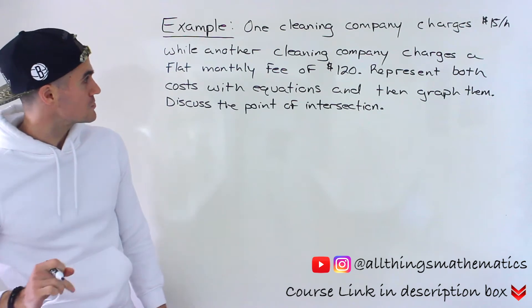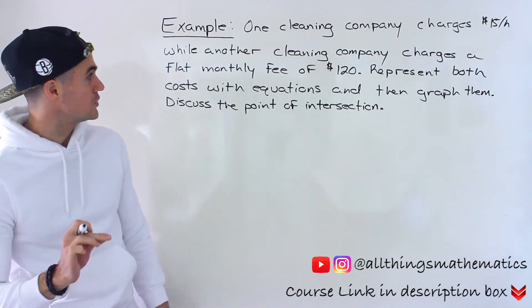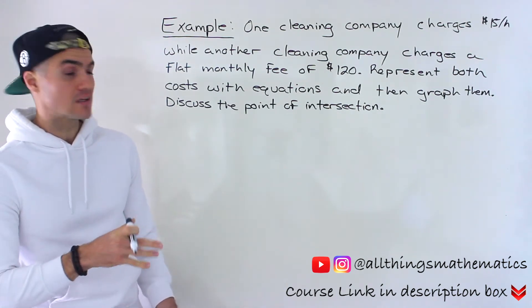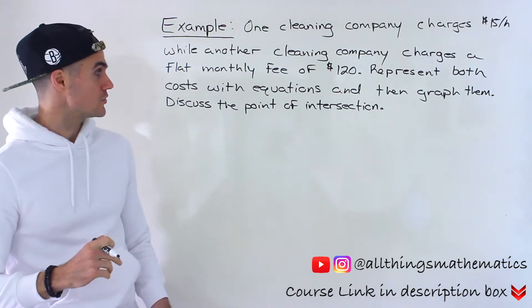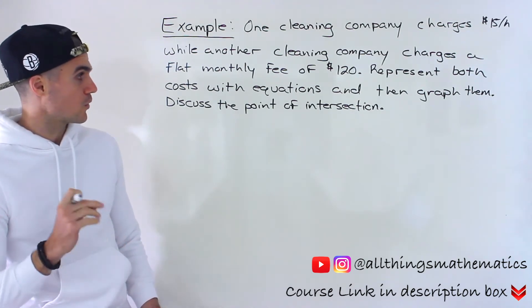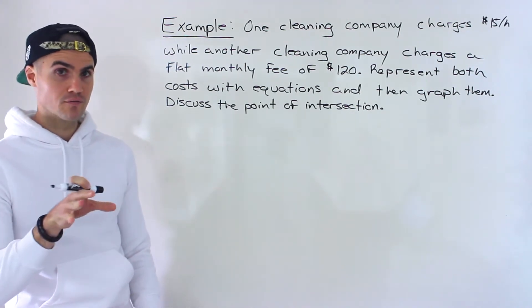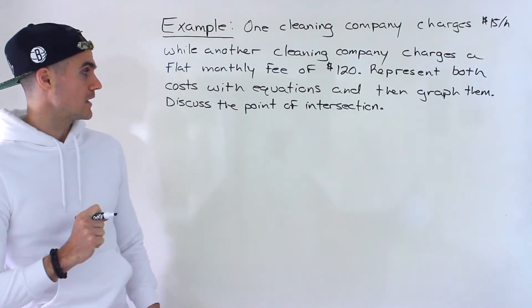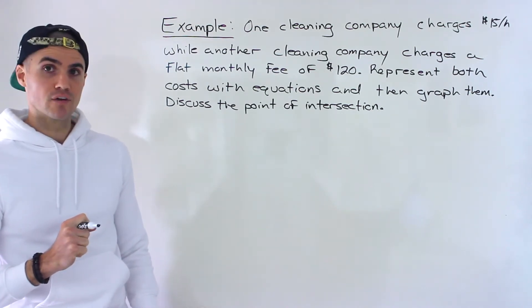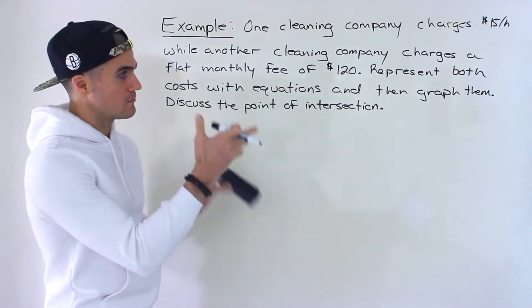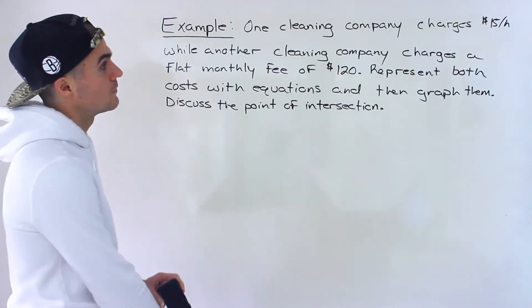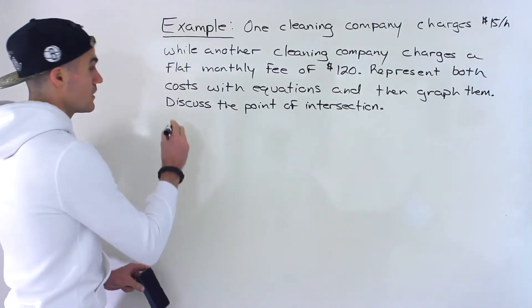So one cleaning company charges $15 per hour, while another cleaning company charges a flat monthly fee of $120. We have to represent both costs with equations and then graph both of those equations, and then discuss the point of intersection between them and what it means in this scenario.